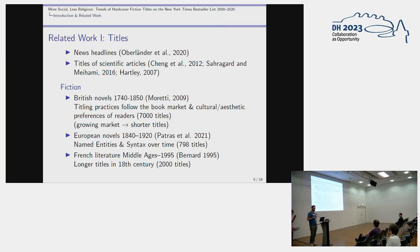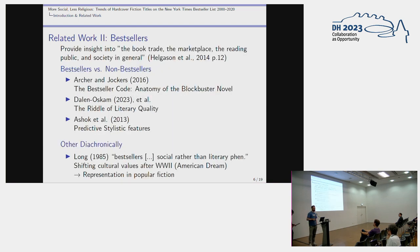Patras et al. from two years ago looked at European novels, focusing mainly on named entities and syntax — where the entity stands and which roles entities have — working with 798 titles. There's also work from 1995 on French literature going back to the Middle Ages, finding longer titles in the 18th century, though only with 2,000 titles over that large timeframe. Hölgersson claims that bestsellers provide insight into the book trade, the marketplace, the reading public, and society in general, and often bestsellers are compared against non-bestsellers.